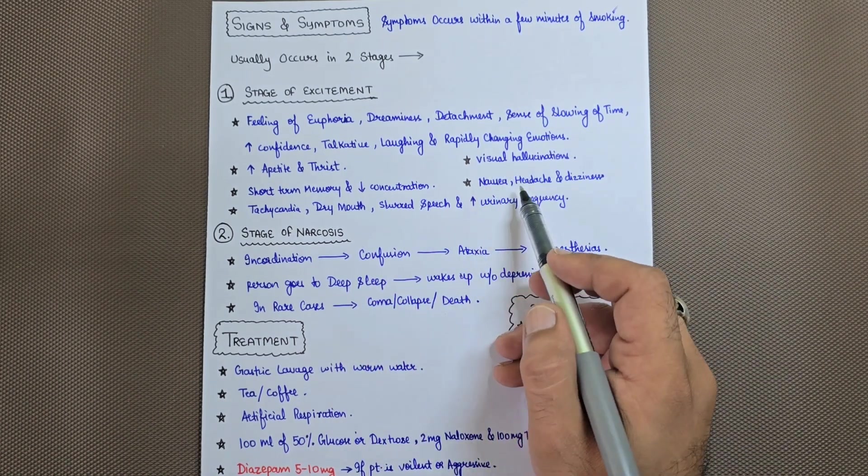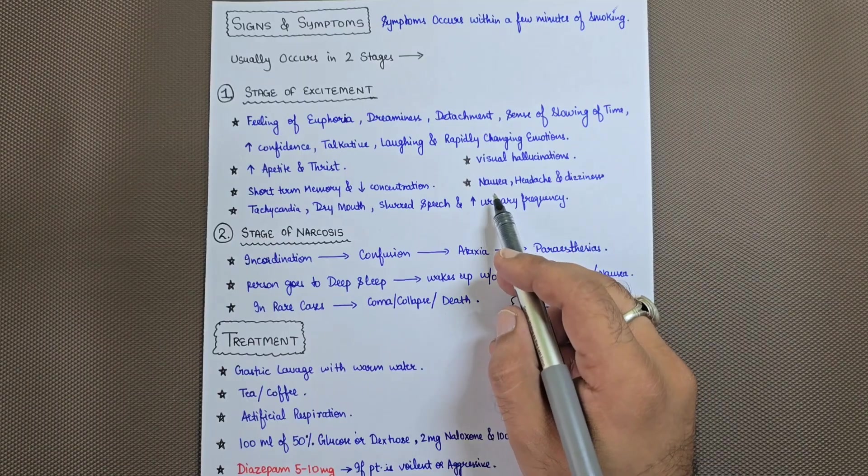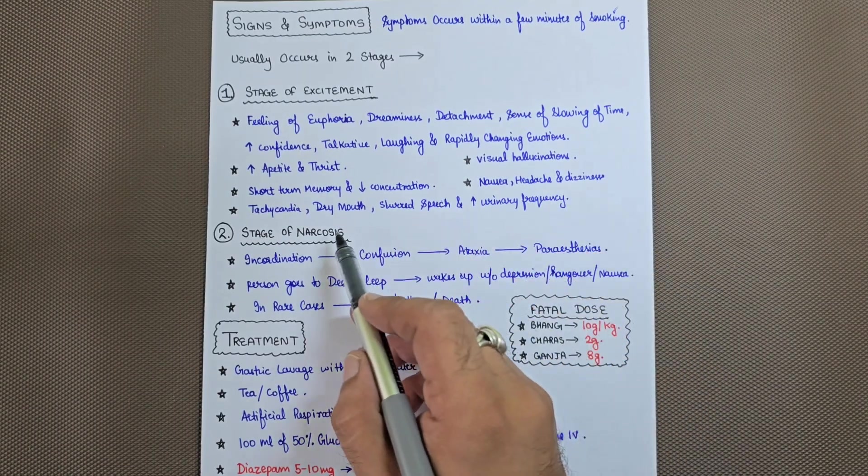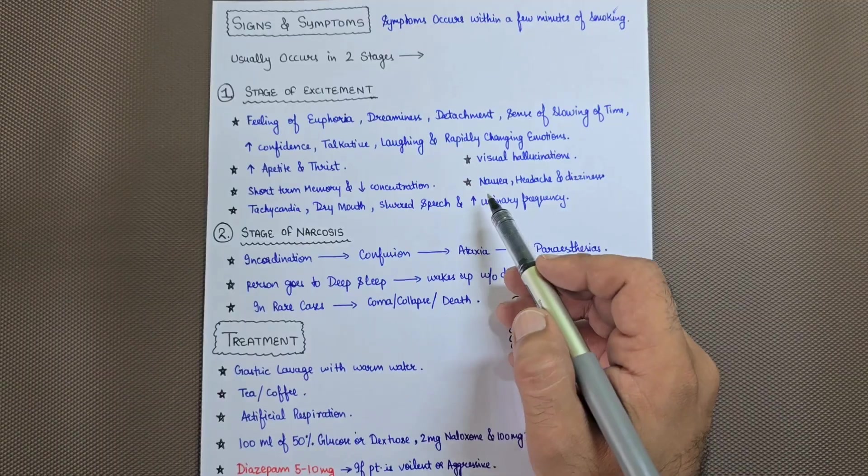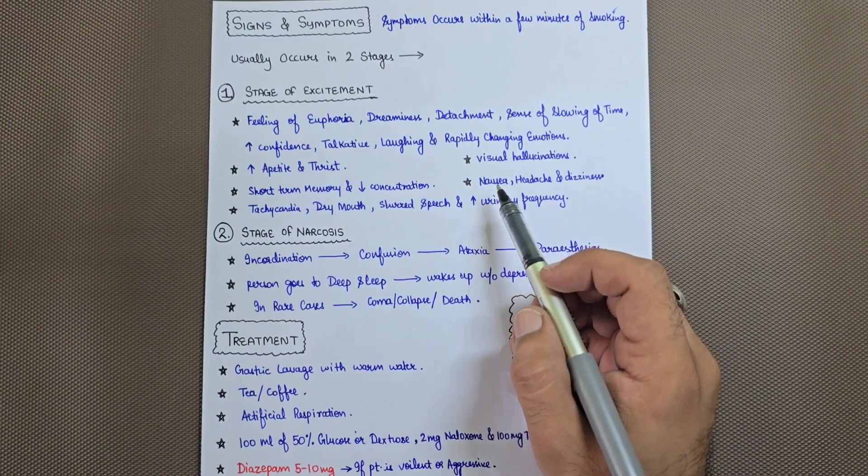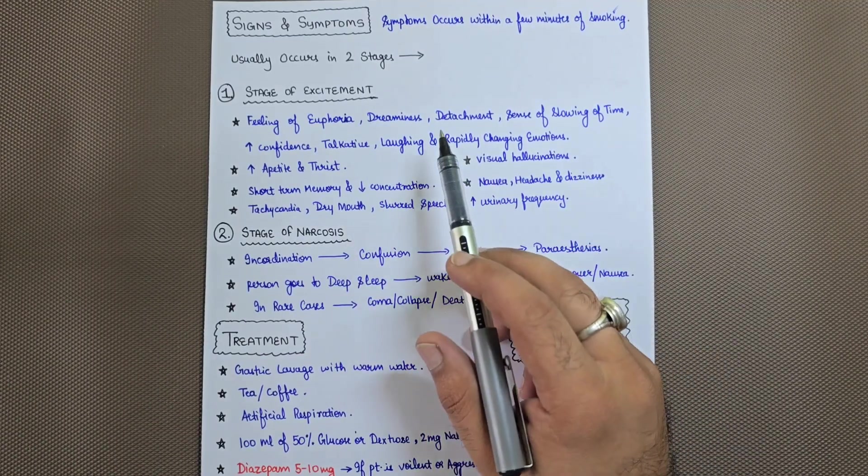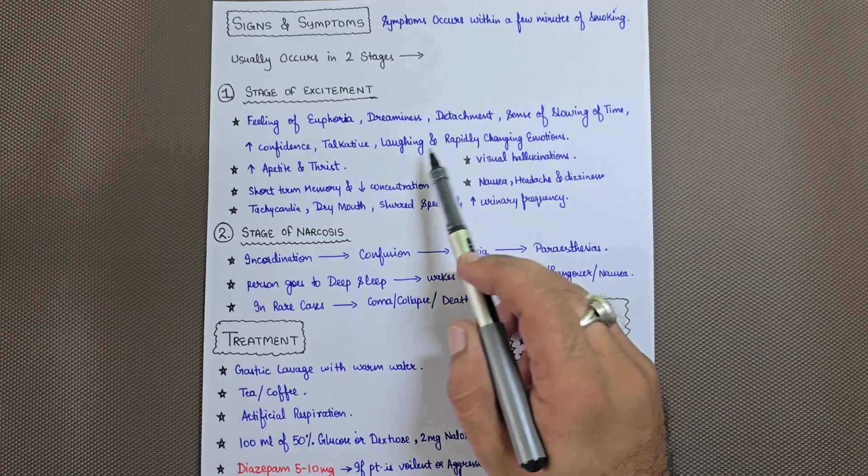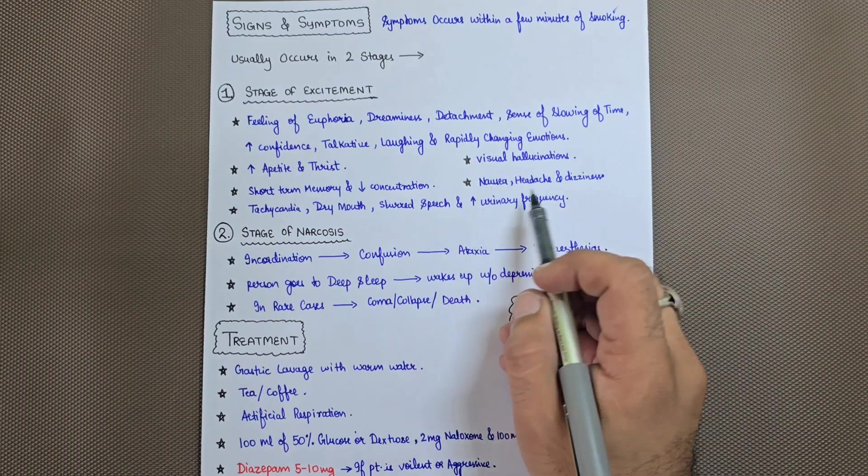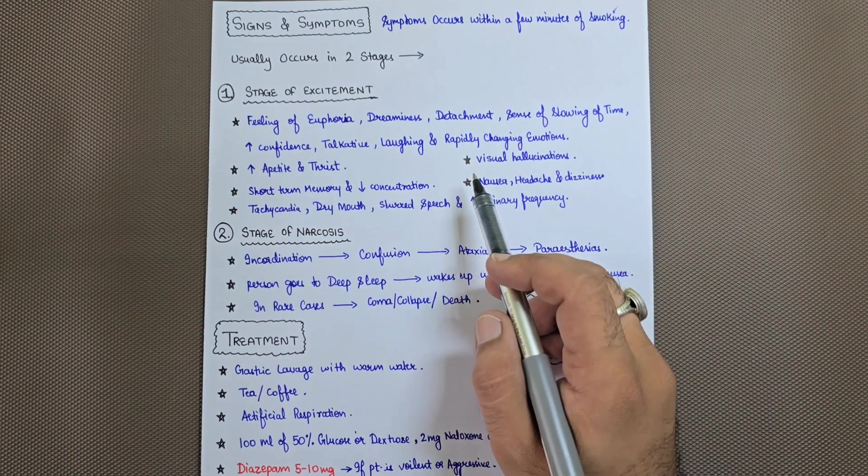Other symptoms include visual hallucinations, nausea, headache, and dizziness. It is not definitive that a person will have all these symptoms. Some patients may have only some of these symptoms. It varies from person to person.